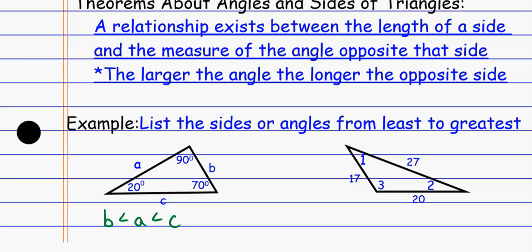When I look at this triangle with given side lengths, I can see which sides are bigger and smaller. The smallest side means the smallest angle must be across from it — that's angle two. The next smallest side, 20, is across from angle one, so angle one is next in size. The biggest side, 27, means the biggest angle must be angle three. That's this comparison of things within one triangle — the relationship between the size of the angle and the size of the opposite side.